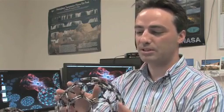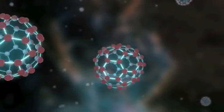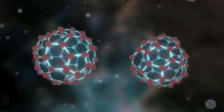We can detect Buckyballs in space through their vibrational motions. These Buckyballs oscillate or vibrate in very different ways, and each way they vibrate corresponds to a very specific color of infrared light that they emit or absorb.